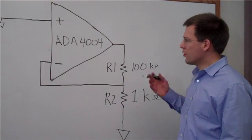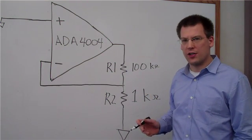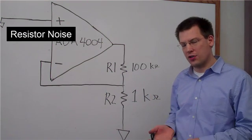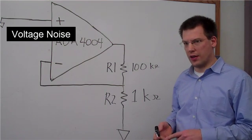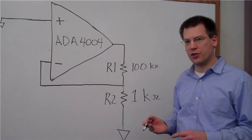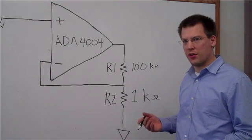When we do the noise calculations for an amplifier configuration, we want to calculate the resistor noise, the current noise of the amplifier, and the voltage noise of the amplifier. These three noise sources are what will determine the noise of our system.